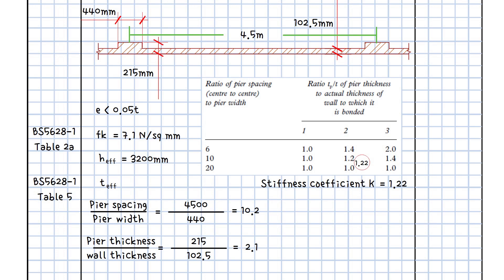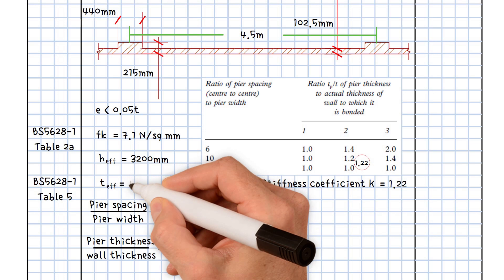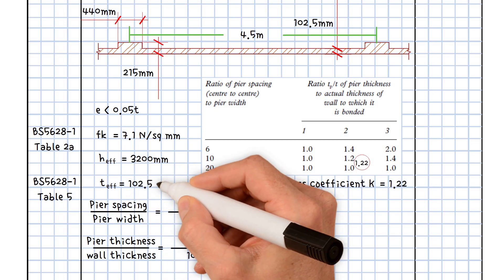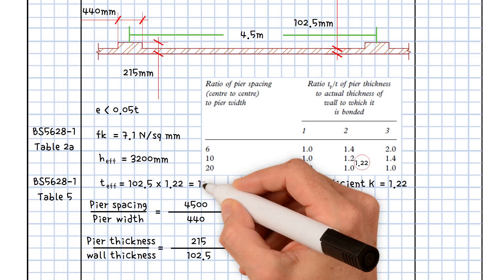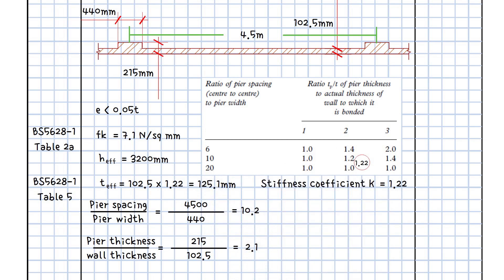As a consequence, the effective thickness of the wall is equal to the wall thickness 102.5 multiplied by the stiffness coefficient 1.22 equals 125.1 millimeters.